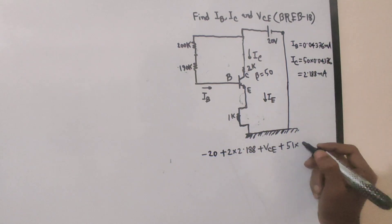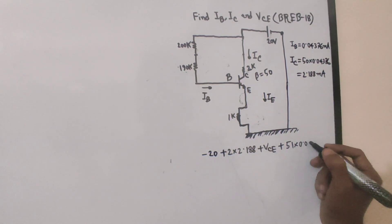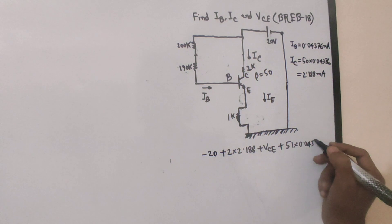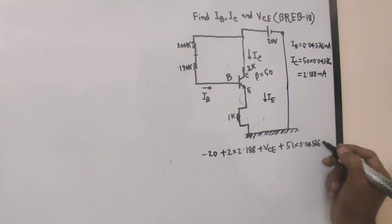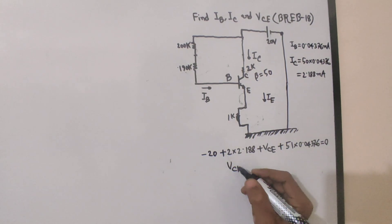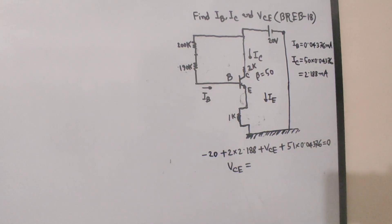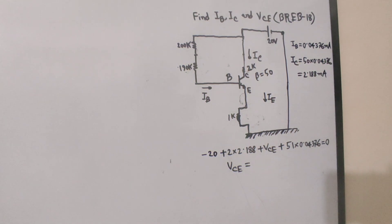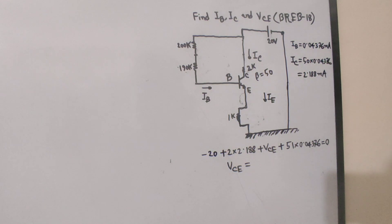Substituting 0.04376 mA into 1k gives the voltage. The VBC calculation: 20 − 2×2.188 − 1×0.04376, which gives us the VBC value.